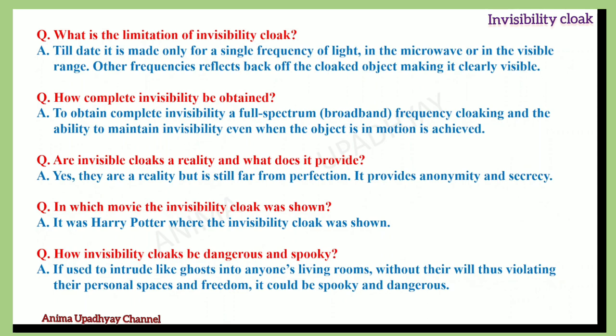What is the limitation of the invisibility cloak? Till date, it is made only for a single frequency of light — in the microwave or in the visible range. Other frequencies reflect back off the cloaked object, making it clearly visible. To obtain complete invisibility, full-spectrum frequency cloaking and the ability to maintain invisibility even when the object is in motion must be achieved. Invisible cloaks are a reality but still far from perfection, providing anonymity and secrecy.